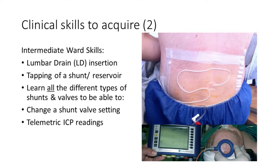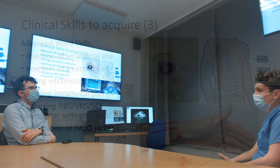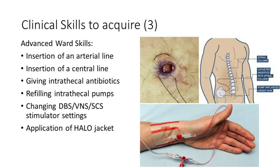Early on you definitely want the registrar to show you how to tap the shunt. Other skills you can acquire on the ward include insertion of an arterial line as patients go to ICU or HDU, giving intrathecal antibiotics or refilling intrathecal pumps, telemetric ICP readings — mainly in paediatrics — and changing stimulator settings such as vagal nerve, DBS, deep brain stimulators, or spinal cord ones.